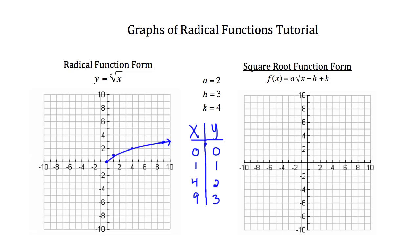Now let me show you the typical square root function form — we'll do this one in green. You may be wondering what the a value is. The a is just going to be a multiplier that affects the square root function. The effect it has is to stretch or shrink the opening of the function.